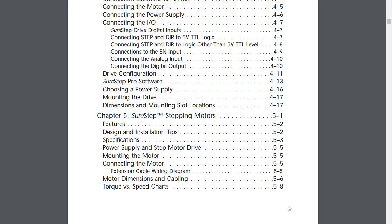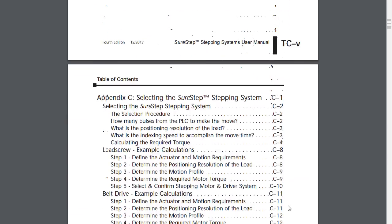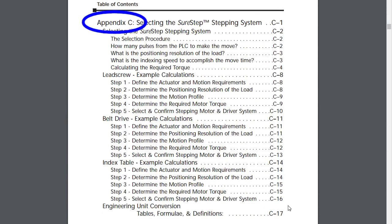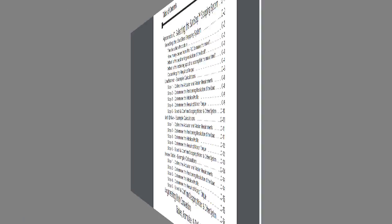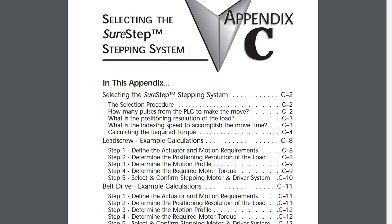You have to take into account all parts of the system to select the right motor. And the user manual shows you how to do that in Appendix C. That's the good news. The bad news is, if you go to Appendix C, it's kind of intimidating.